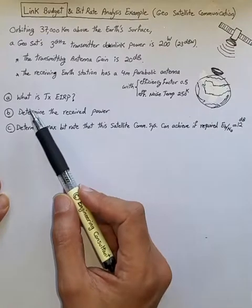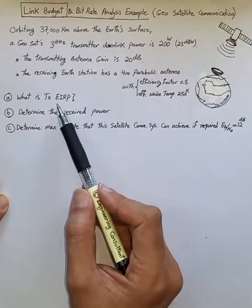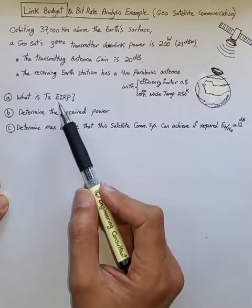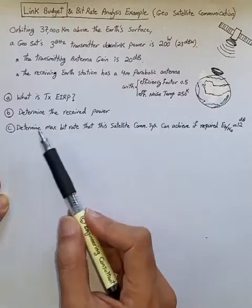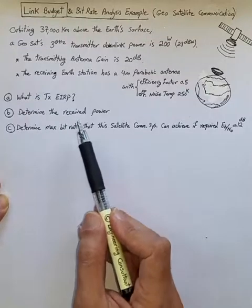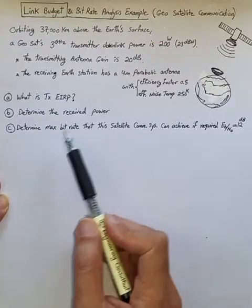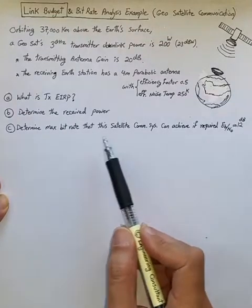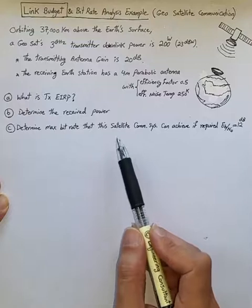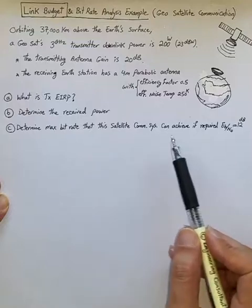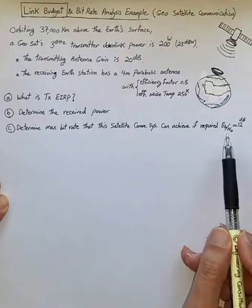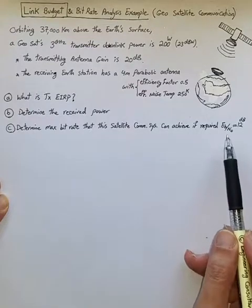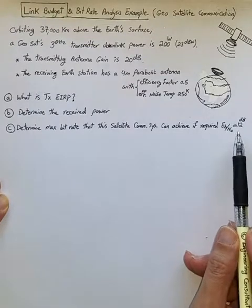What is the transmitter equivalent isotropically radiated power, or EIRP? Figure out the received power, and figure out the maximum bitrate that this satellite communication system can achieve if the required Eb/N0 is 12 dB.